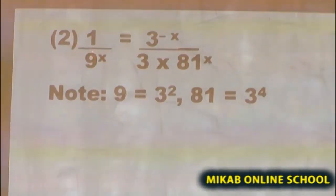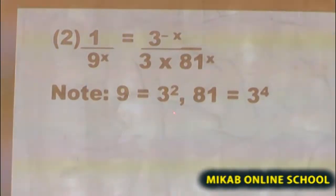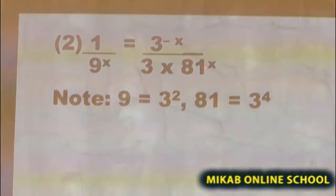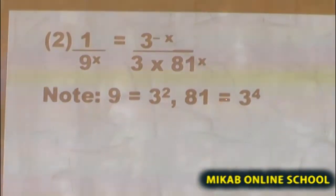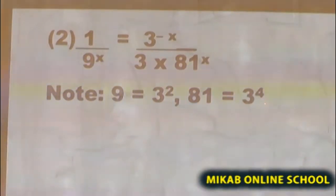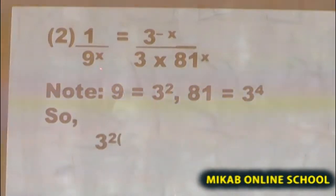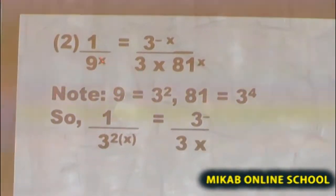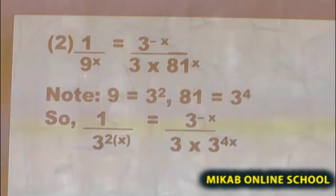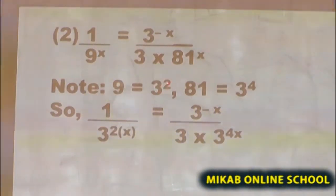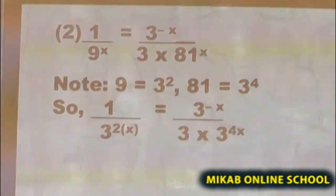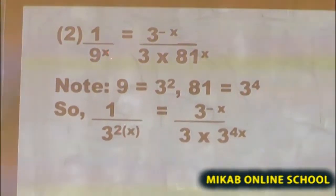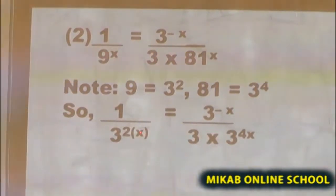If we express 9 in terms of 3, we get 3 raised to the power of 2. If we express 81 in terms of 3, we get 81 equals 3 raised to the power of 4. So we remove 9 from the left-hand side and replace it with 3 raised to the power of 2, raised to the power of x.